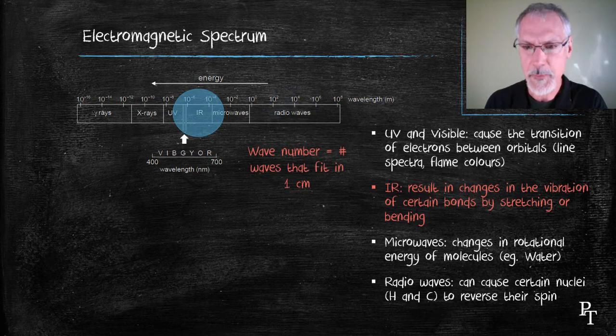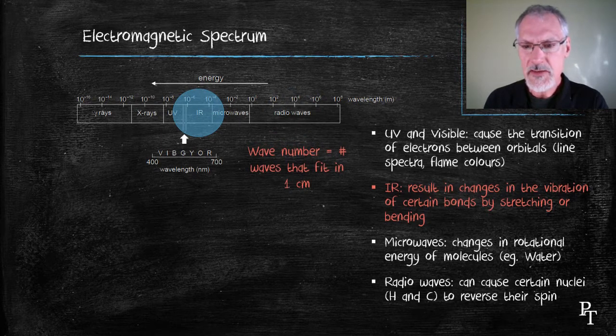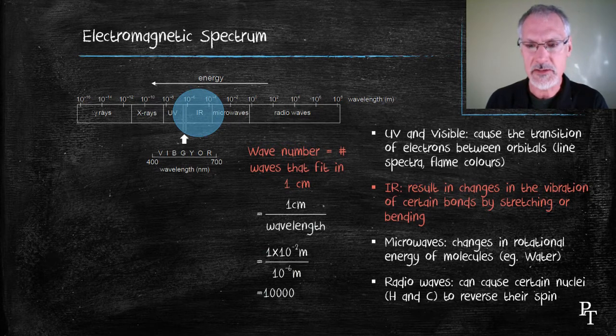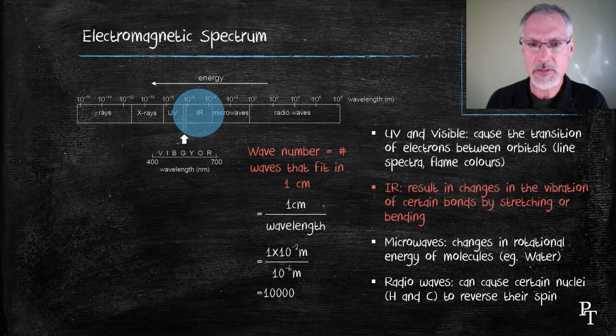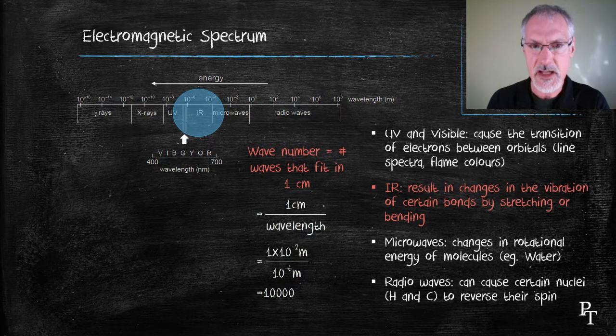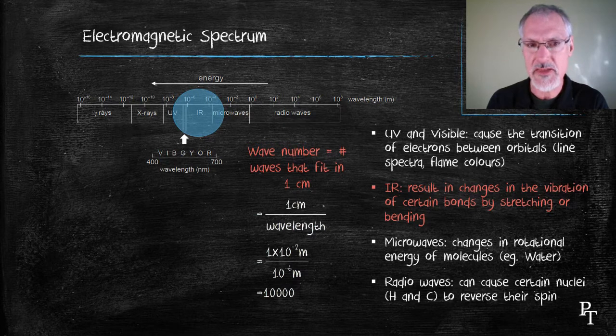Now back to infrared, today's topic. We define the wave number as the number of waves that would fit into a single centimeter. So I'm going to take one centimeter and divide it by the wavelength of a typical infrared radiation. For here I'm choosing 10 to the minus 6 meters. That would generate a wave number of 10,000.